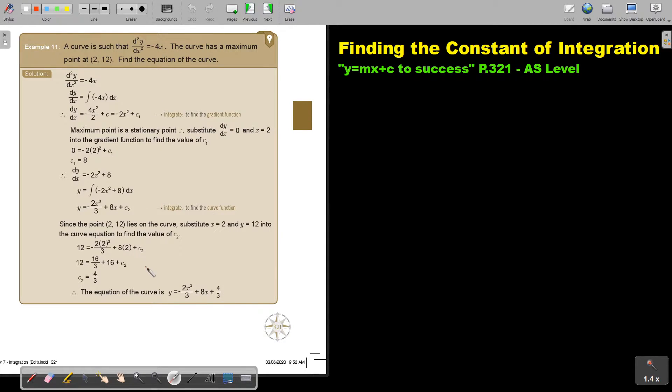Let's look at another example. A curve is such that the second derivative function is negative 4x. The curve has a maximum point at 2 and 12. Find the equation of the curve.